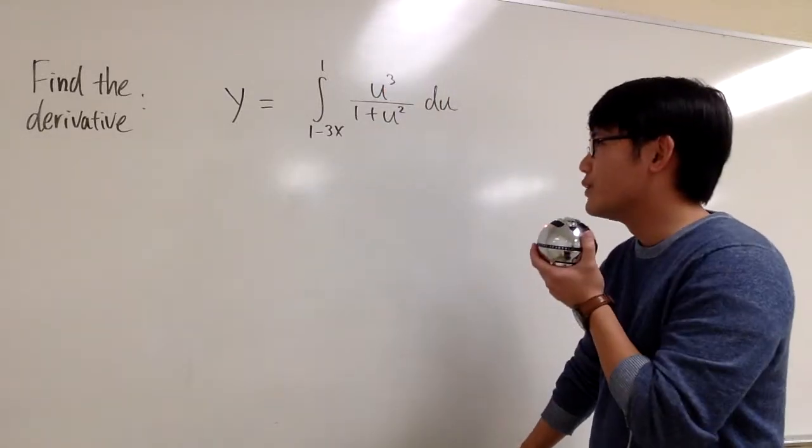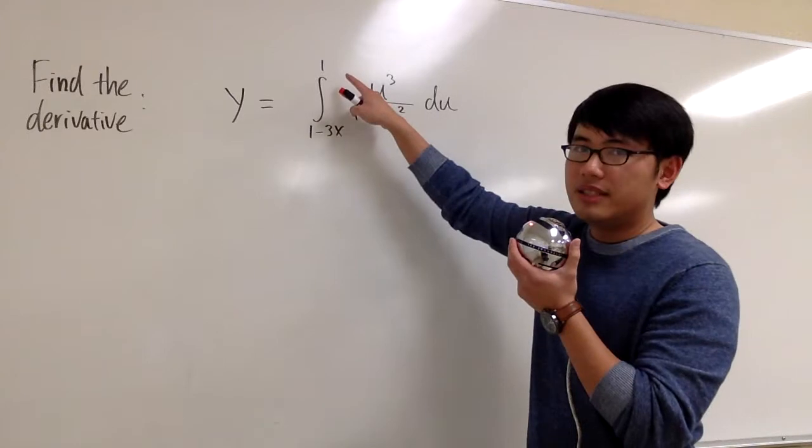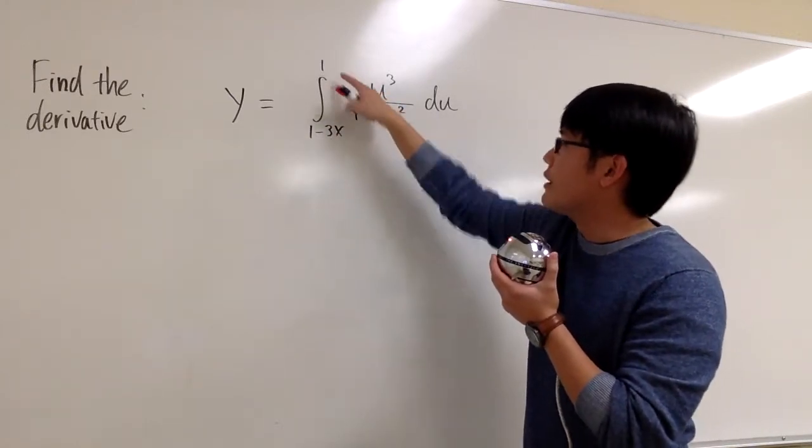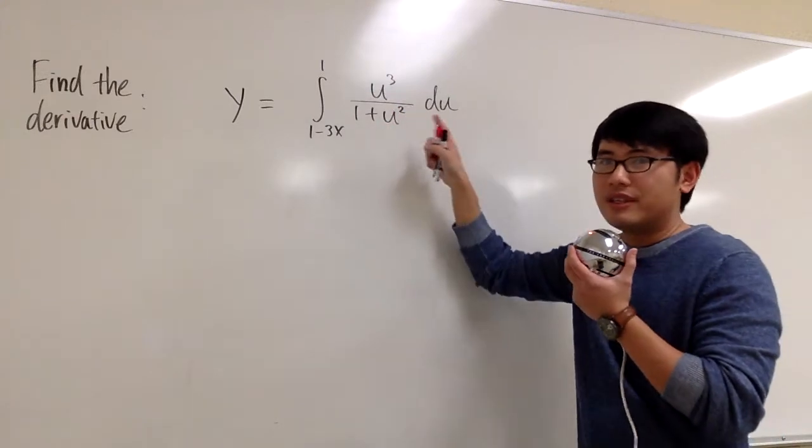Another FTC1 equation. We are going to find the derivative of the function. This is defined in terms of an integral. Integral from 1 minus 3x to 1, and we have a crazy expression inside of the integral.